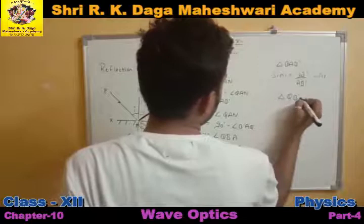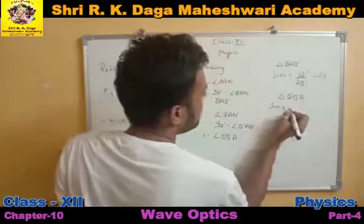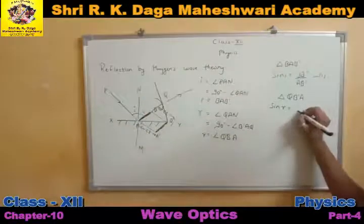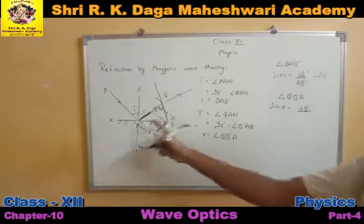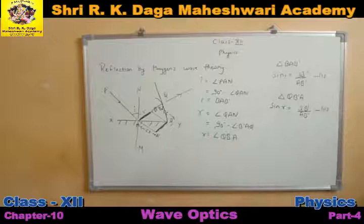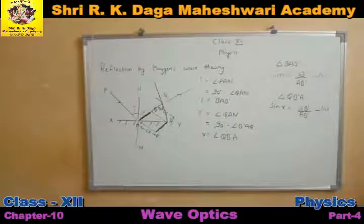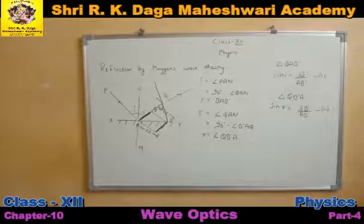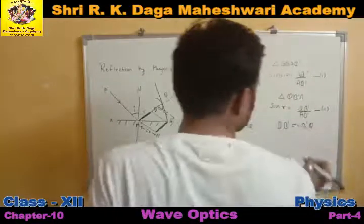Now, the speed of light is very high, so the time taken by light to travel from B to B' and from B' to Q is almost equal. This means QB' is nearly equal to BB'. So we can substitute — the value of BB' is AB' sin i, and the value of QB' is AB' sin r. Since QB' is nearly equal to BB', we get AB' sin i is nearly equal to AB' sin r.